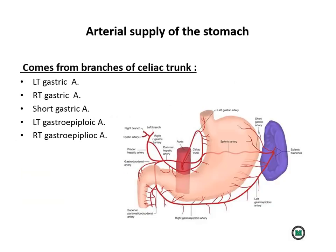The arterial supply of the stomach is from branches of the celiac trunk. Along the lesser curve: the left gastric artery (branch of the celiac trunk) and the right gastric artery (branch of the hepatic artery). The greater curve is supplied by the short gastric artery (branch of the splenic artery), the left gastroepiploic artery (branch of the splenic artery), and the right gastroepiploic artery (branch of the gastroduodenal artery, which branches from the common hepatic artery). The celiac trunk gives the left gastric, splenic, and common hepatic arteries.